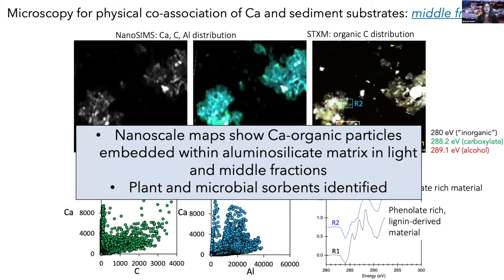What we've learned using these nanoscale microscopies is that we can detect calcium associated with organic material. We see calcium-organic particles embedded in an aluminosilicate matrix, and we can identify calcium associated with specific plant and microbial sorbents, as well as with organic material that's been degraded to the point where it's not readily identifiable as having been derived from either of these sources. But this doesn't tell us about the calcium binding to organic matter per se — what is the actual chemical form of calcium in these systems, and how does it bond to the organic matter?